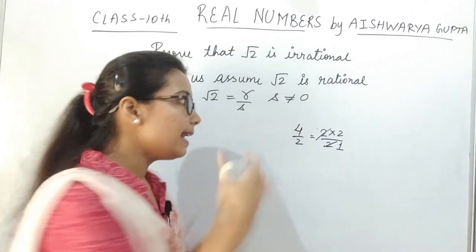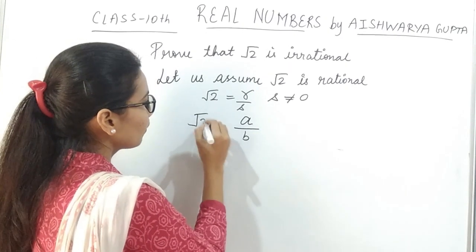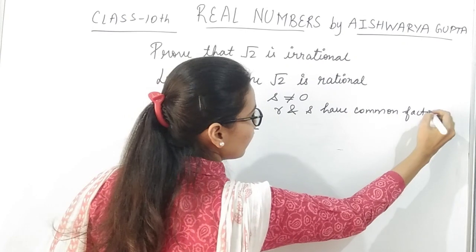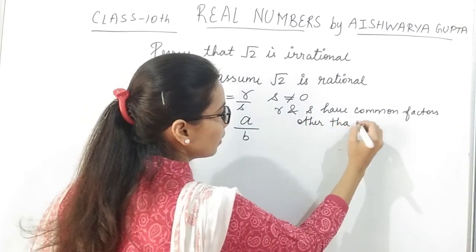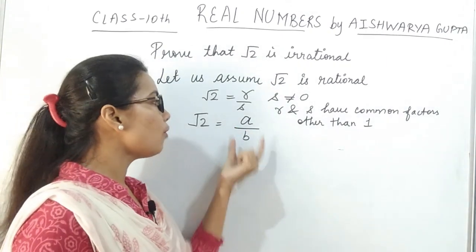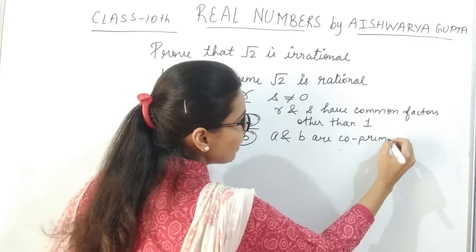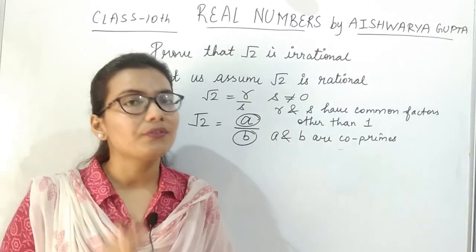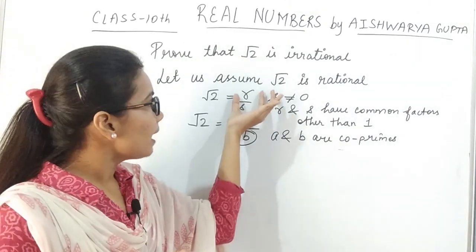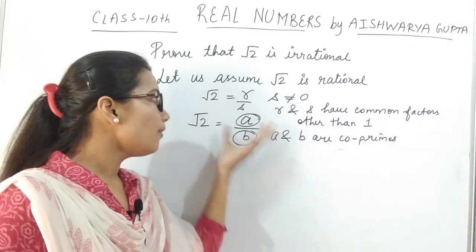If R and S have common factors other than 1, then we divide by the common factor and write it in the form A upon B, such that A and B are co-primes — meaning they don't have any common factor other than 1. So the common factor of A and B is 1, because if R and S had a common factor, we have already divided it out. So this form has co-primes.